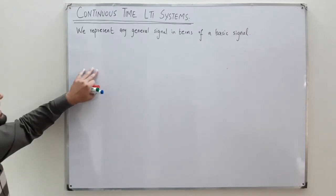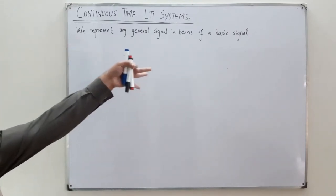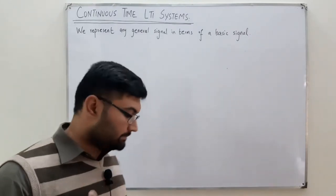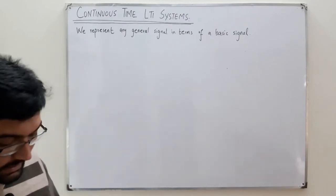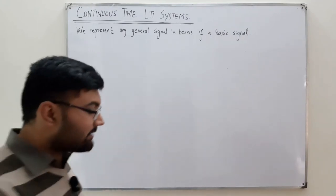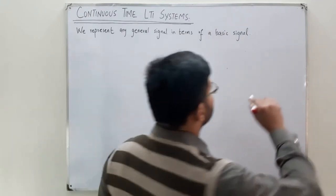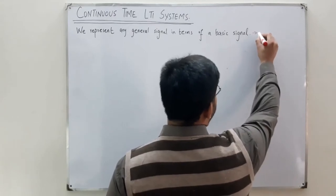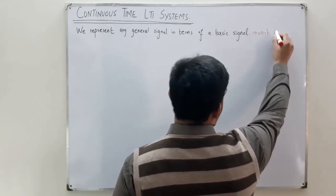The basic idea is to represent any general signal in terms of a basic signal, and the basic signal that the book has chosen for this purpose is the unit impulse signal.